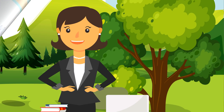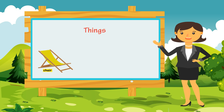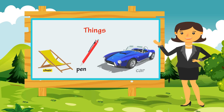We have so many things around us, such as chair, pan, and car. These names are examples of nouns which are things.